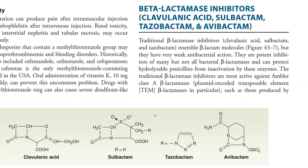We have different kinds of beta-lactamase inhibitors, such as clavulanic acid, sulbactam, and tazobactam. These are traditional beta-lactamase inhibitors, which actually resemble the beta-lactam molecule, but they have very weak antibacterial action.